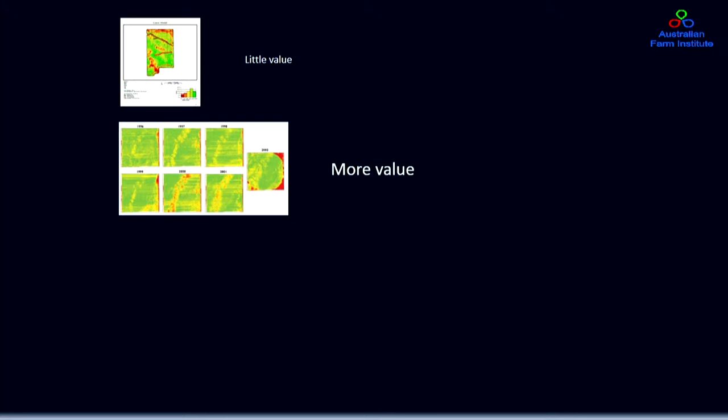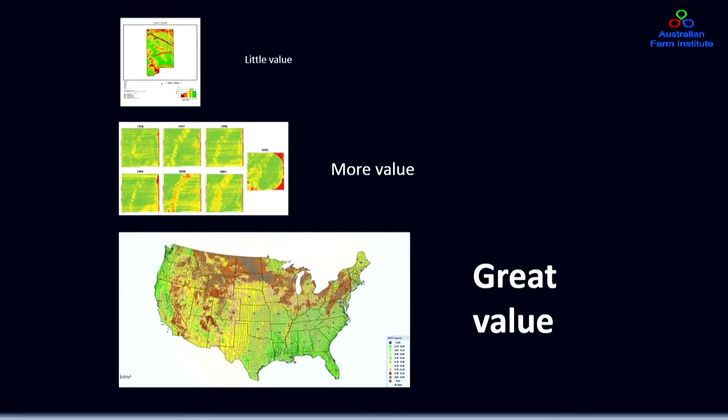To give an example: one year's yield map from a particular paddock is of pretty limited value. Five to ten years of yield maps in combination with an understanding of rainfall conditions in each of those years starts to give you something you can actually use to make future decisions. And if you had yield maps for an entire country, coupled with soil data and meteorological data, you can learn an enormous amount. By themselves, small pieces of data don't actually generate much value — it's only when combined in the right systems and volume that you start to get value.